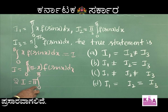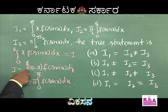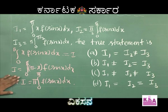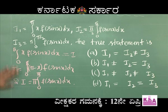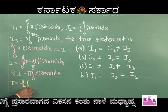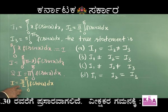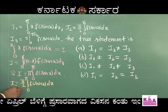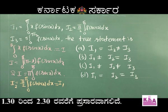The x terms cancel, leaving 2i = π·∫₀^π f(sin x)dx, so i = (π/2)·∫₀^π f(sin x)dx. This is exactly i2. Therefore i1 = i2. This rules out options b and c — either option a or option d must be correct.